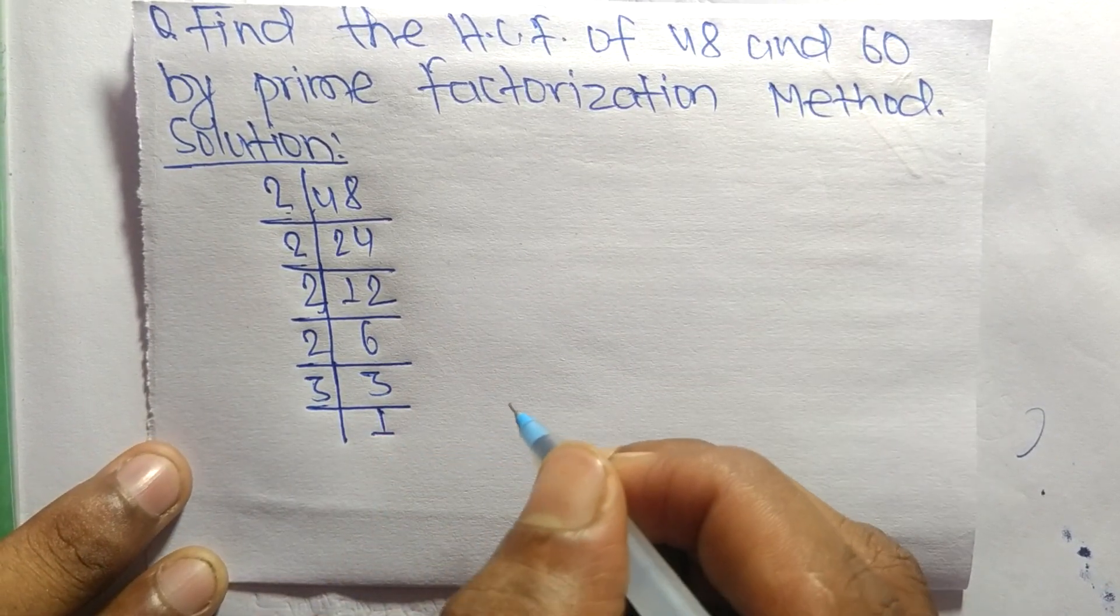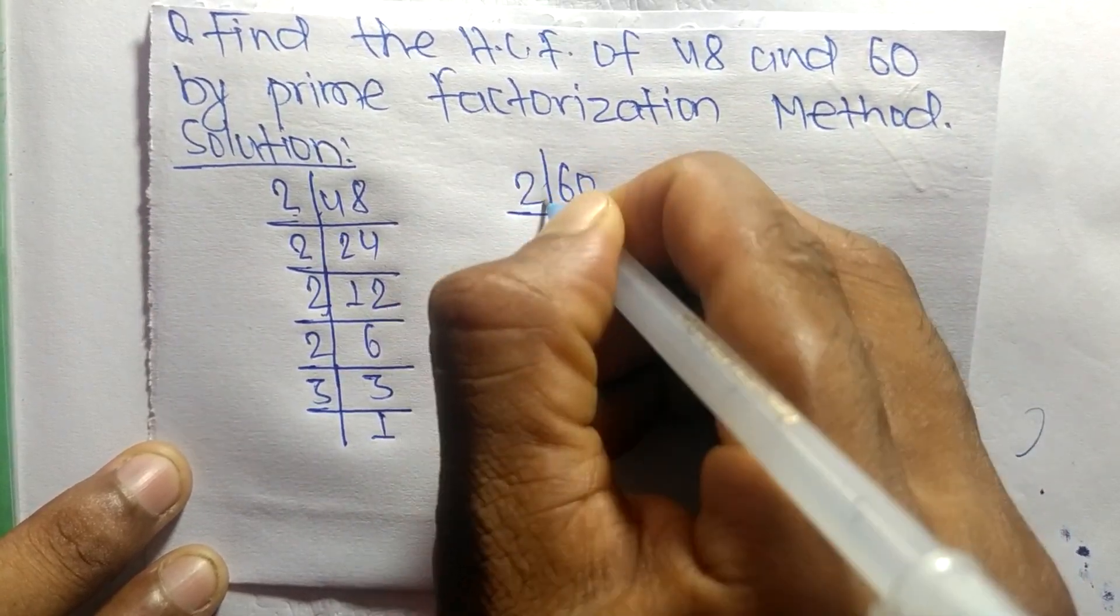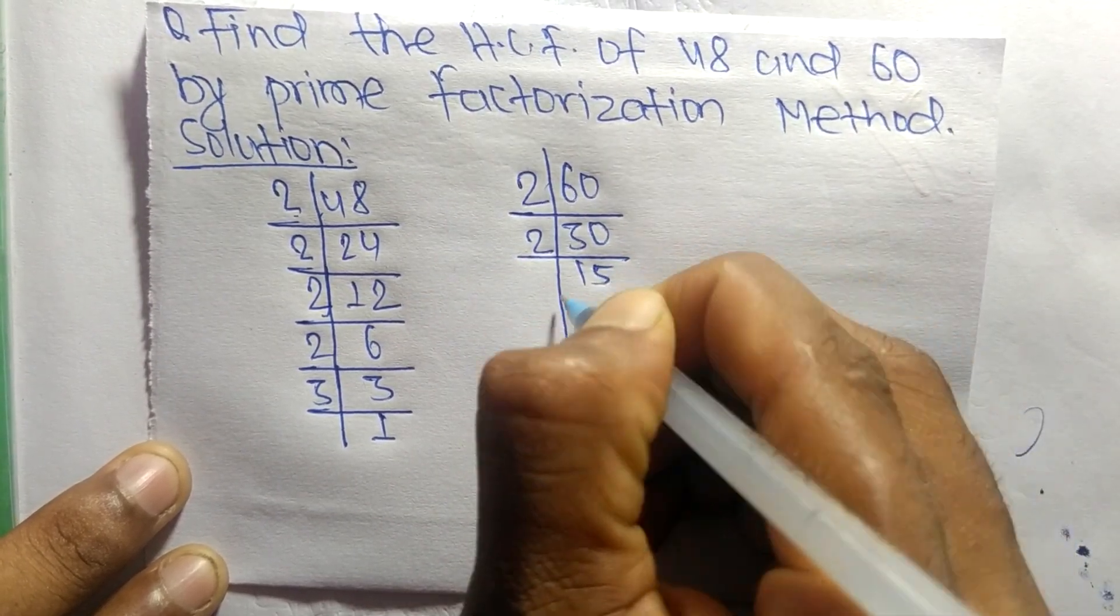Likewise, the prime factors of 60 are: 2 times 30 equals 60, 2 times 15 equals 30.